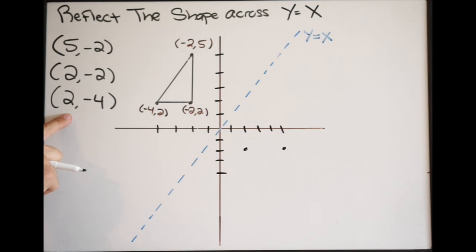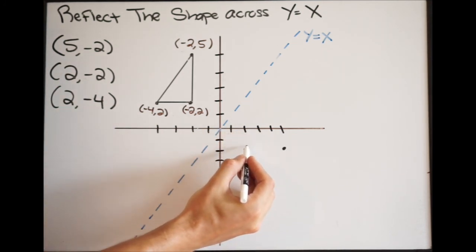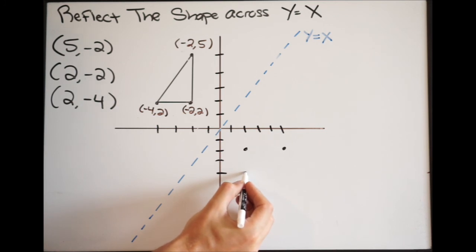Moving on to our last point, we're going to go to the right 2 and then down 4. That puts us right here.